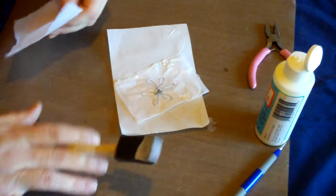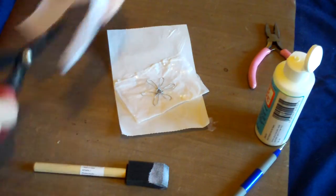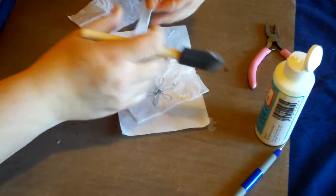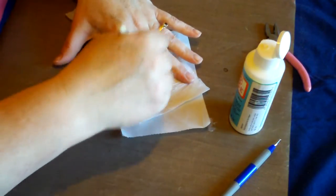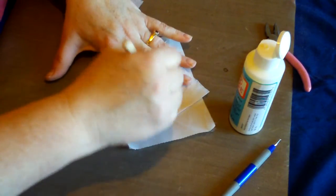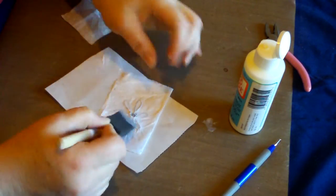Next, take another piece of the tissue paper and place it on top. And again, Mod Podge. Now make sure that it gets right in. And as you can see, it's covering and you can see where the wire is, right?